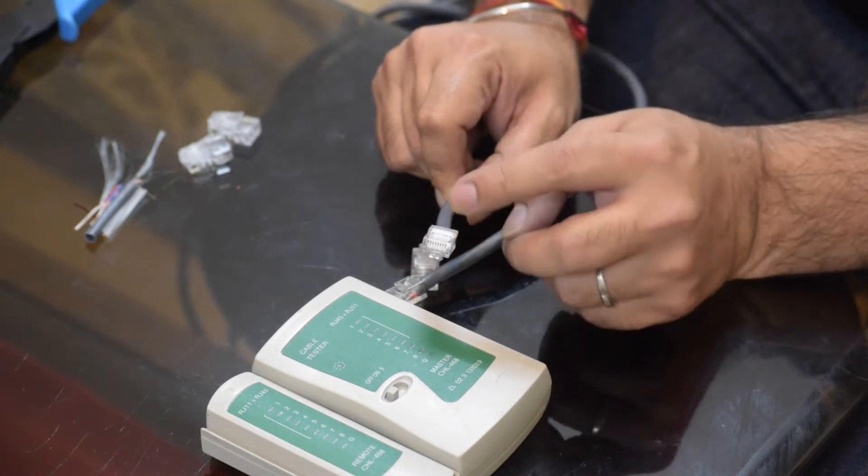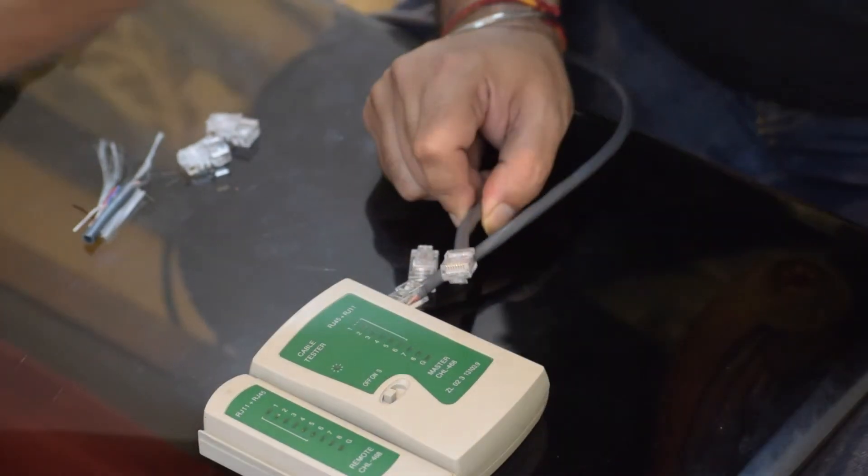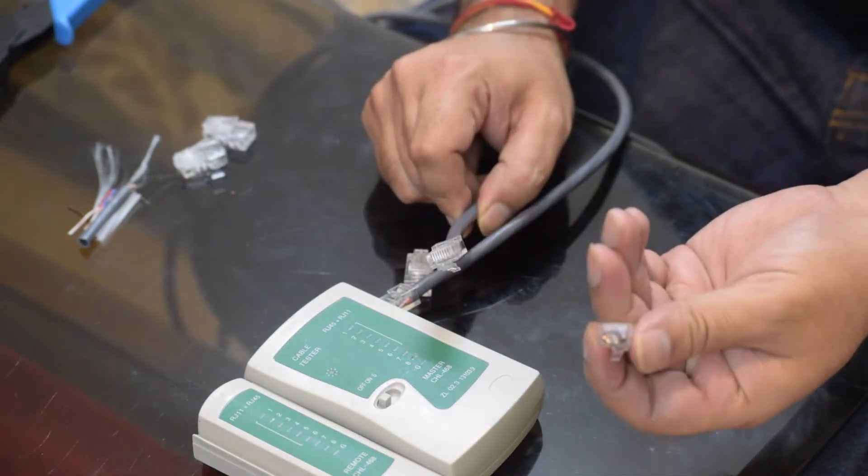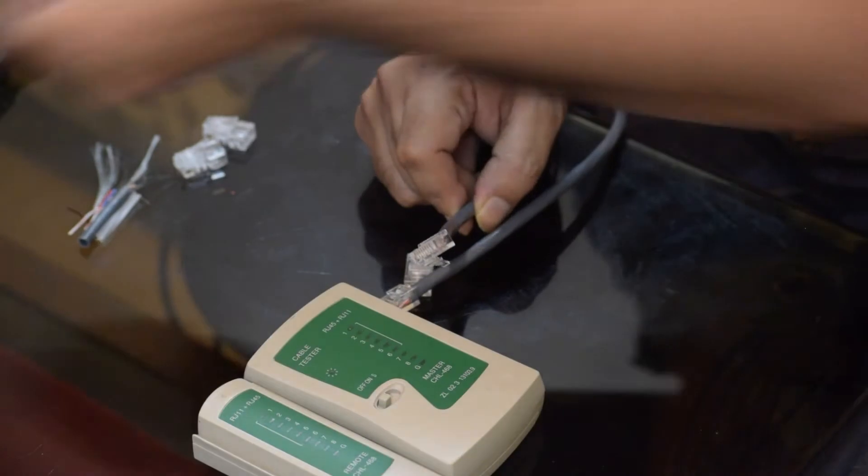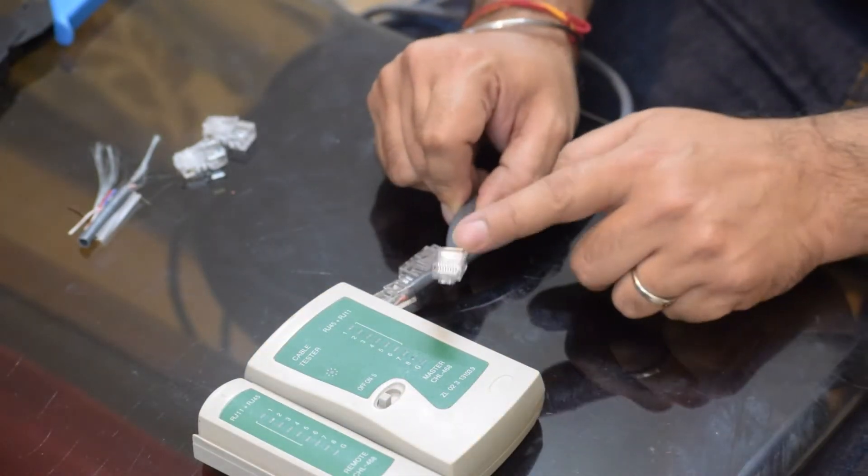So I have gone ahead and removed the older crimp which is the dodgy one here. I chopped that off completely. It's a waste. But I put on a new one.